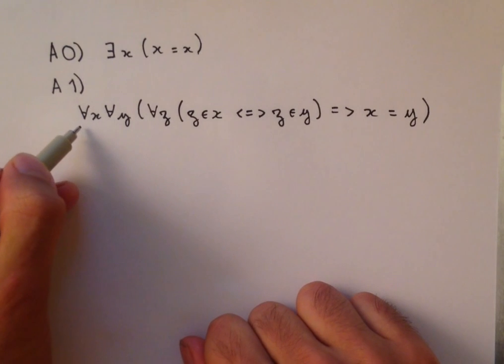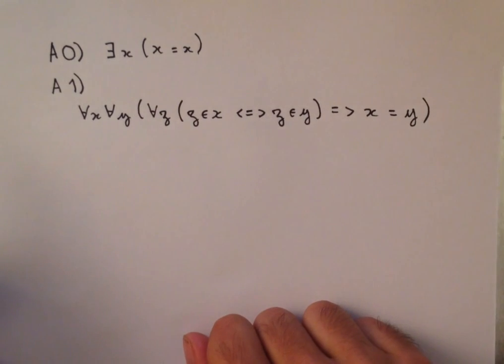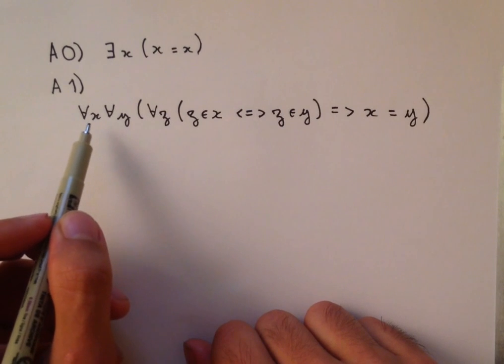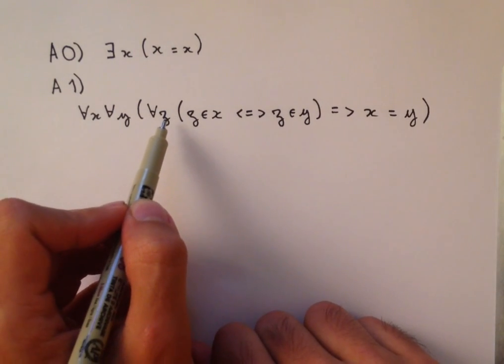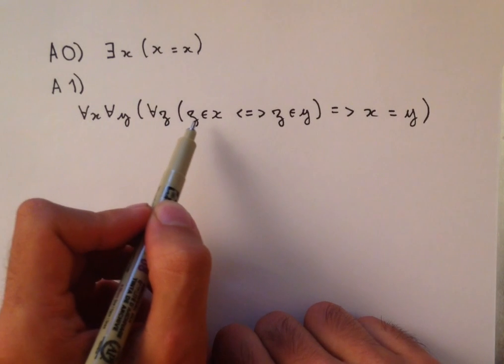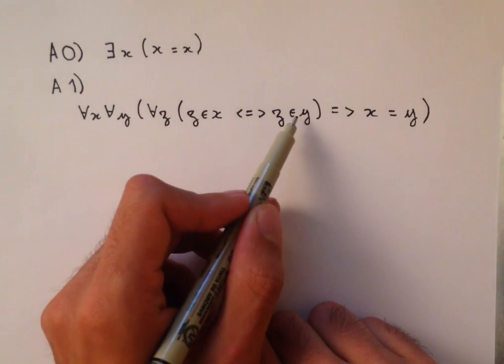So this upside-down a symbol means for all. It behaves just like the backwards e, there exists symbol, except it means for all. So what we're saying here is that given any two sets x and y, given any set z, if z is in x is equivalent to z is in y,